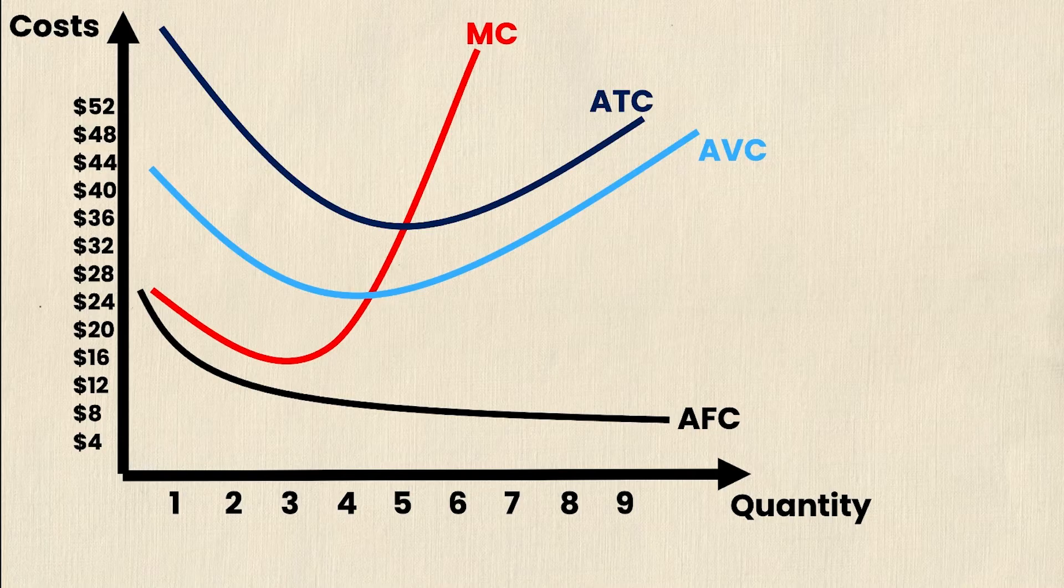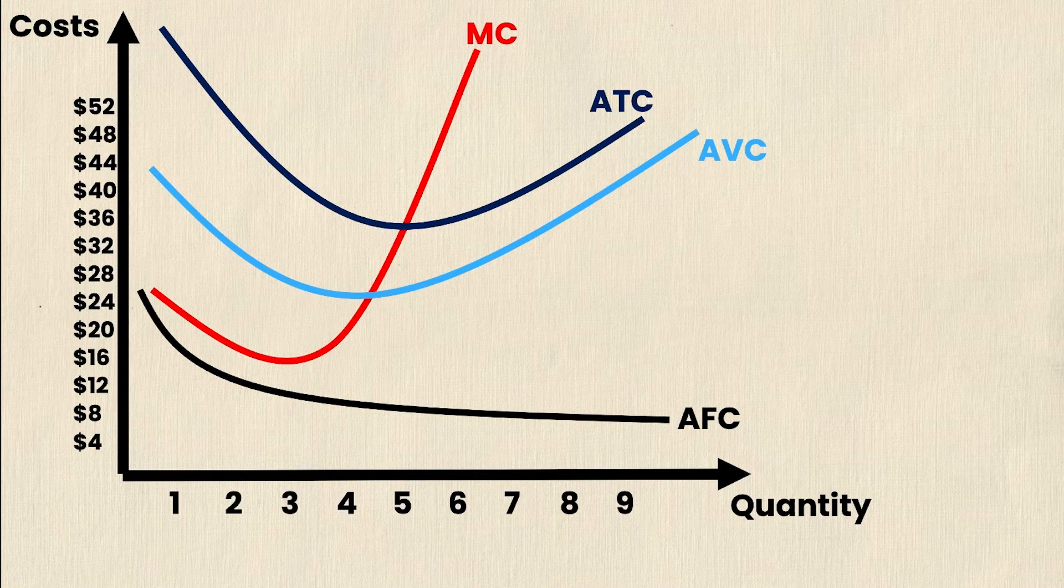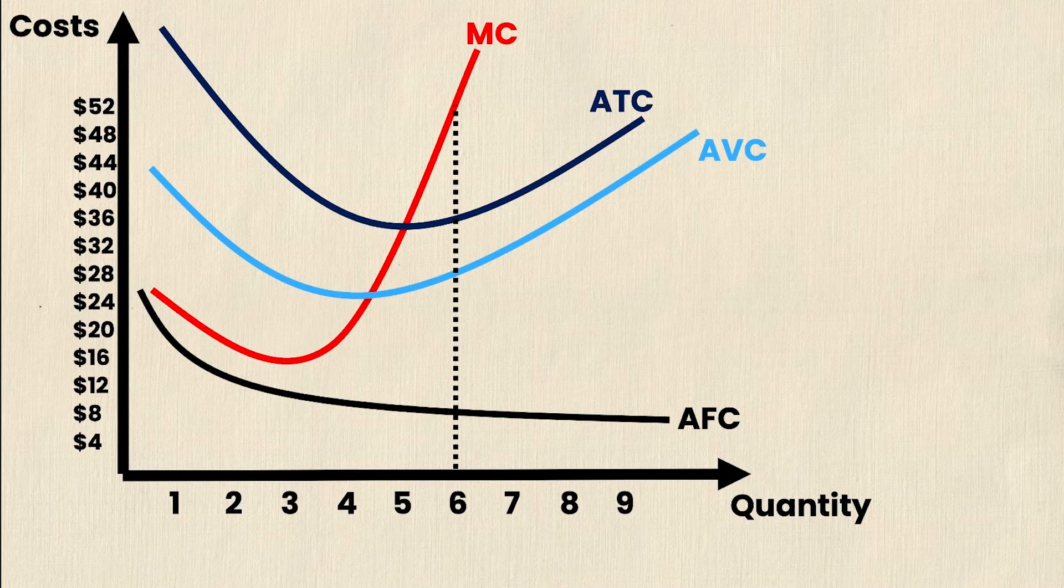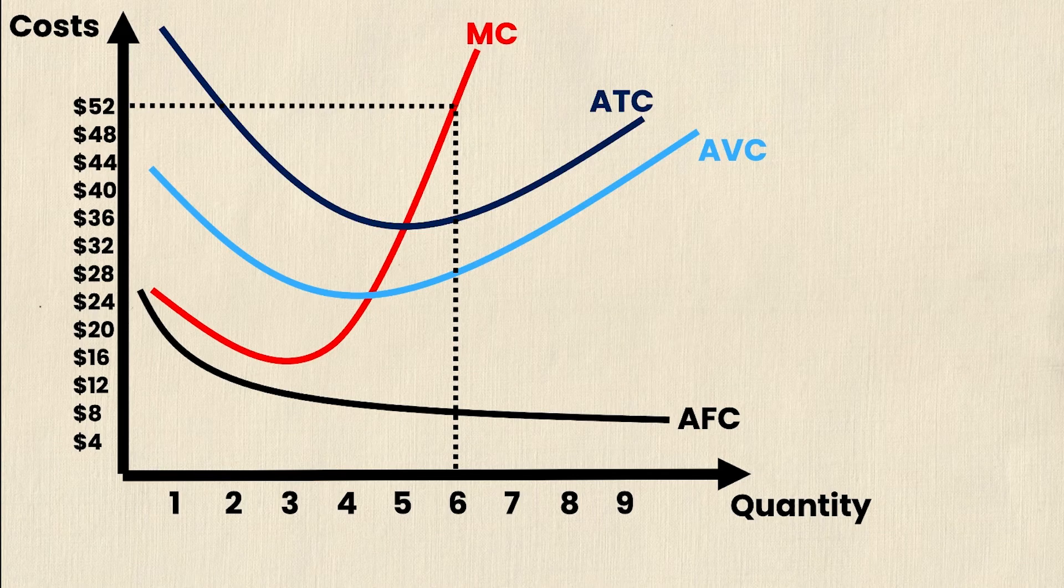So once we have these curves on the graph, how do we actually interpret them? How do we make sense out of them? What if our professor asks what the marginal cost of creating a sixth unit is? We would go to the quantity equals six or output equals six on the bottom, follow it all the way up to the marginal cost curve, and then follow that along to the y-axis to see what the marginal cost is. And upon doing that, we see that it's $36.